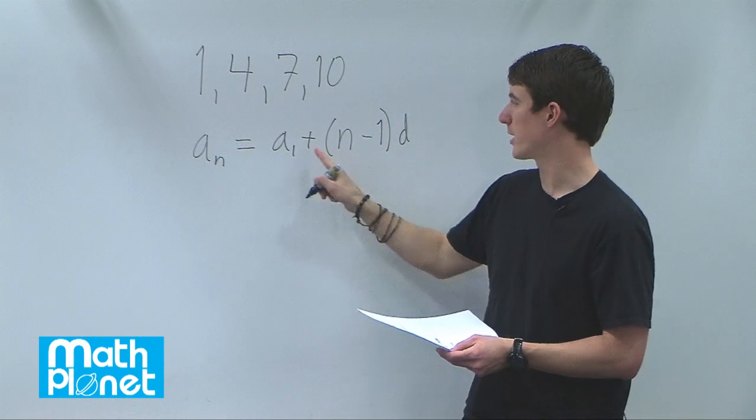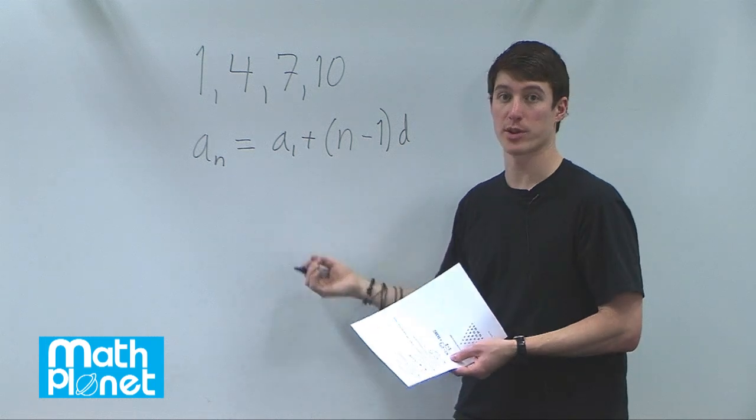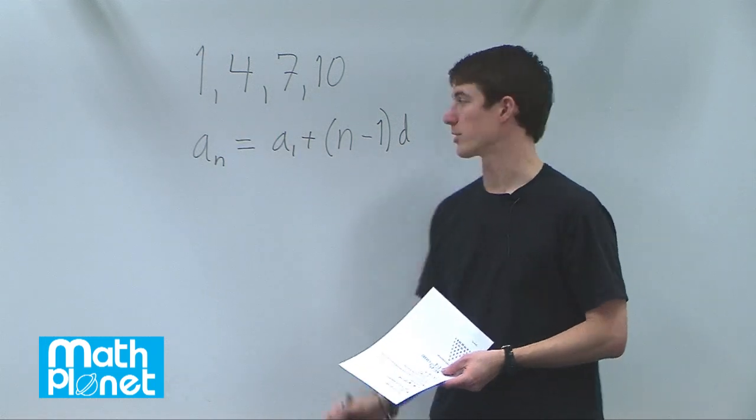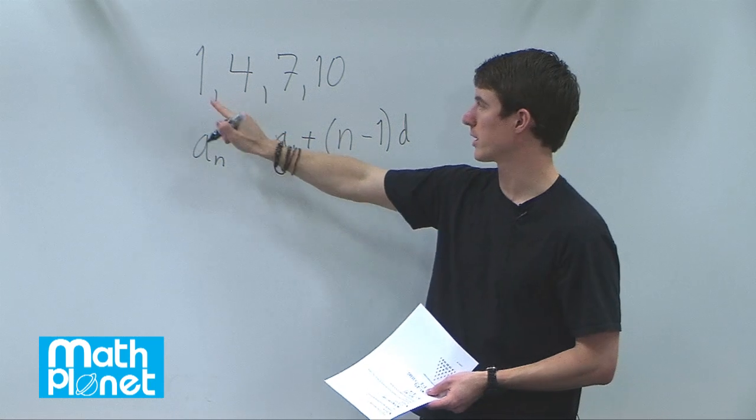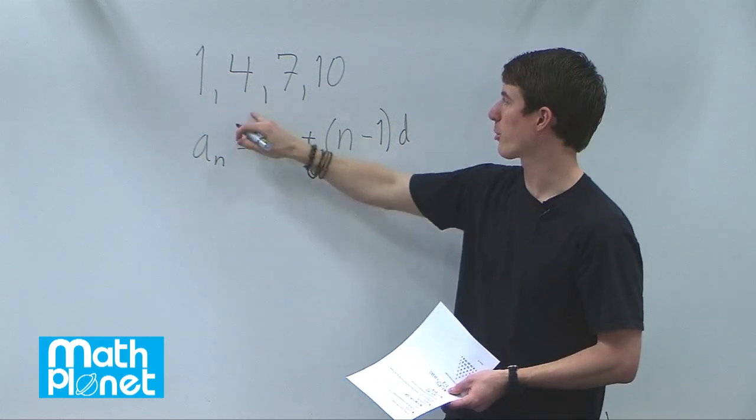So we see that the number of terms is what we might want to solve for. a1 is just 1, the first term, and d is the difference, so 3. So 1 plus 3 is 4, 4 plus 3 is 7, etc.